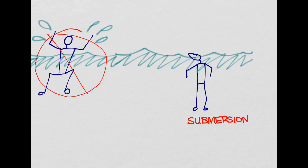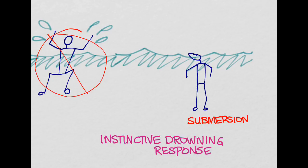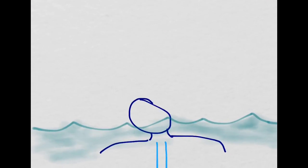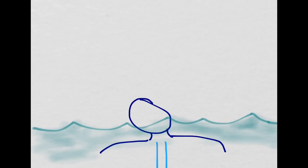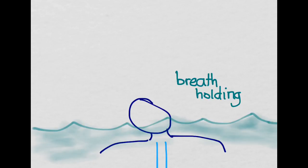Lifeguards are trained to recognize this instinctive drowning response, because when you reach the point where you look motionless and are just barely moving, that's when you're really about to drown. After the instinctive drowning response, the patient enters the process of drowning. The first thing that happens is you hold your breath to prevent water from getting into your airways. But at some point, air hunger overcomes your ability to hold your breath and you start gasping.